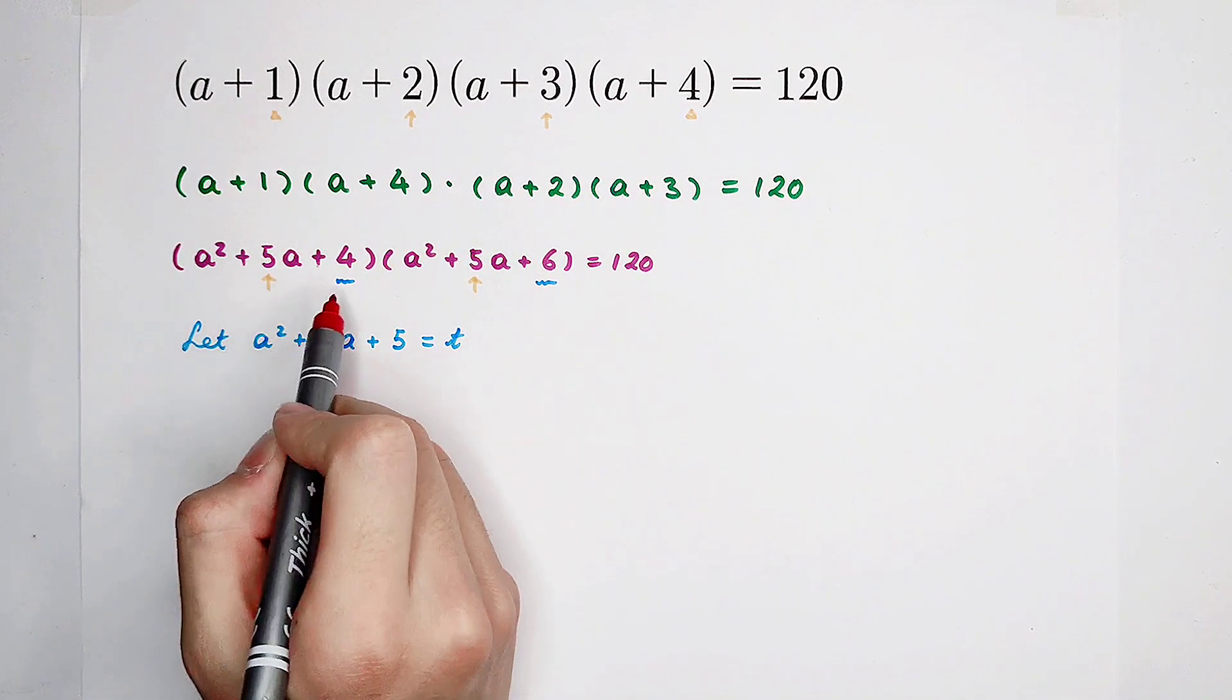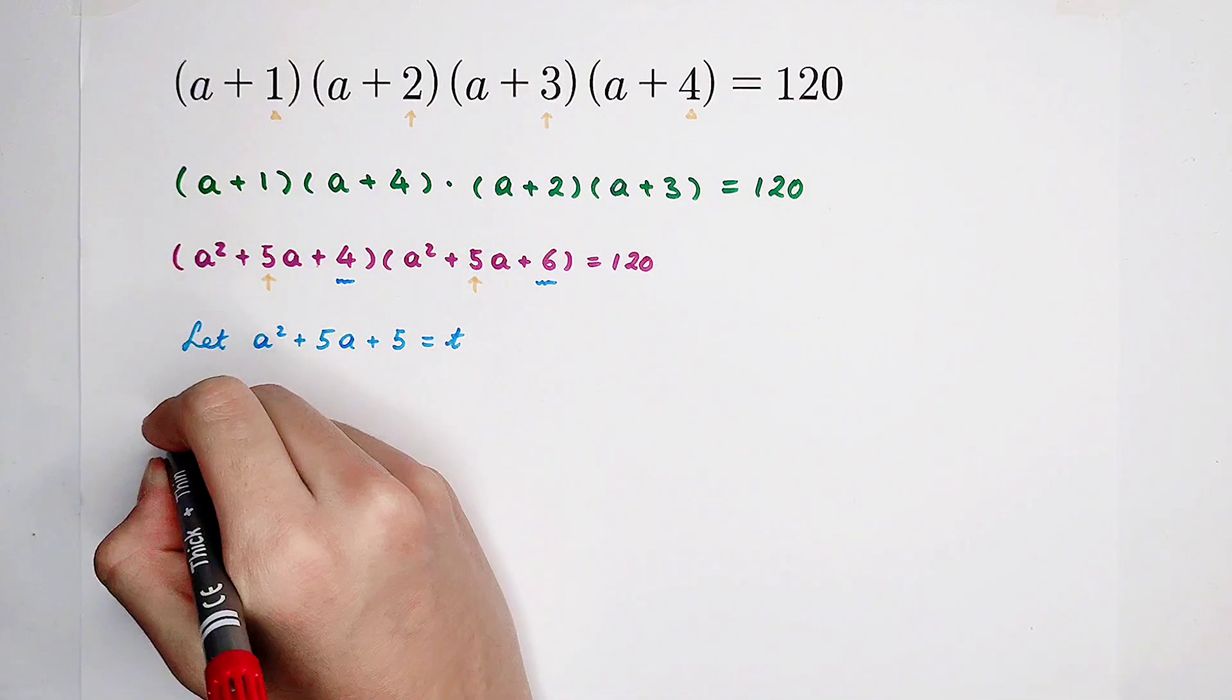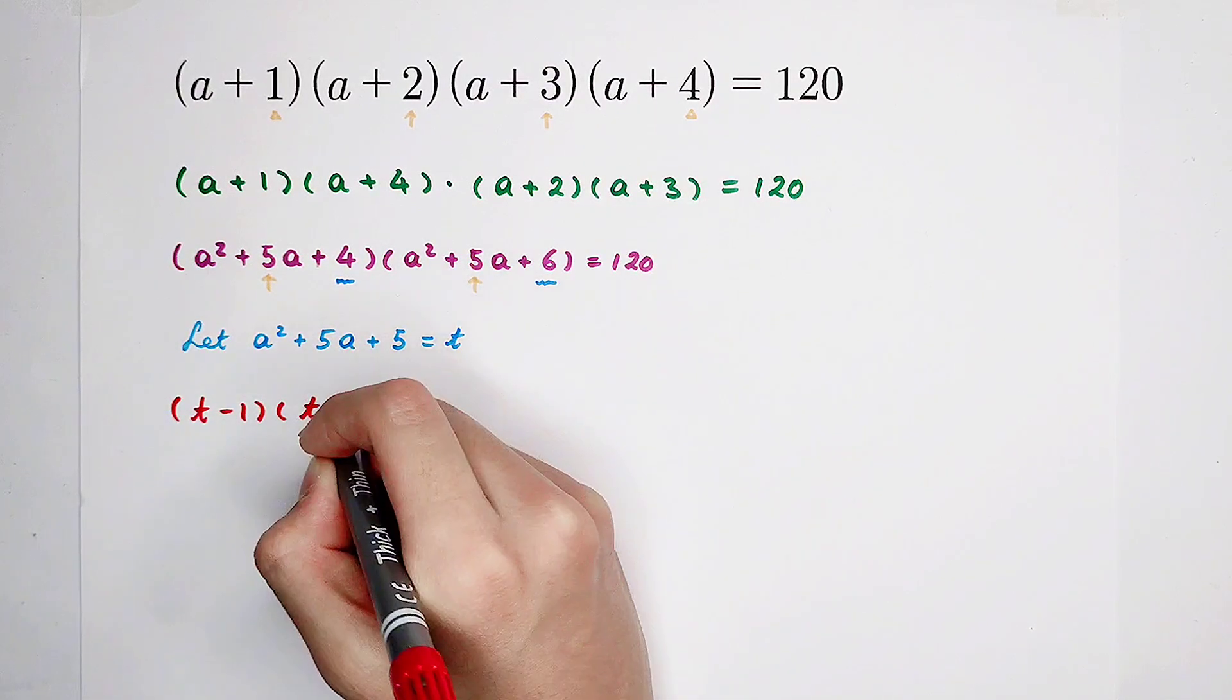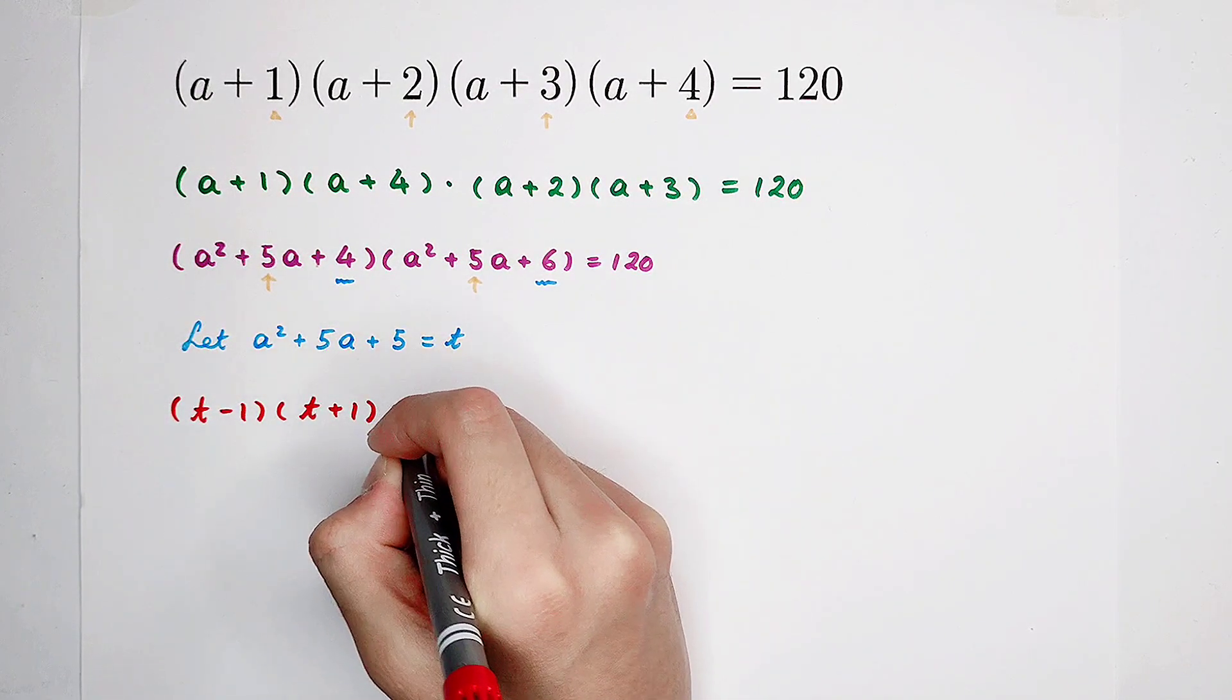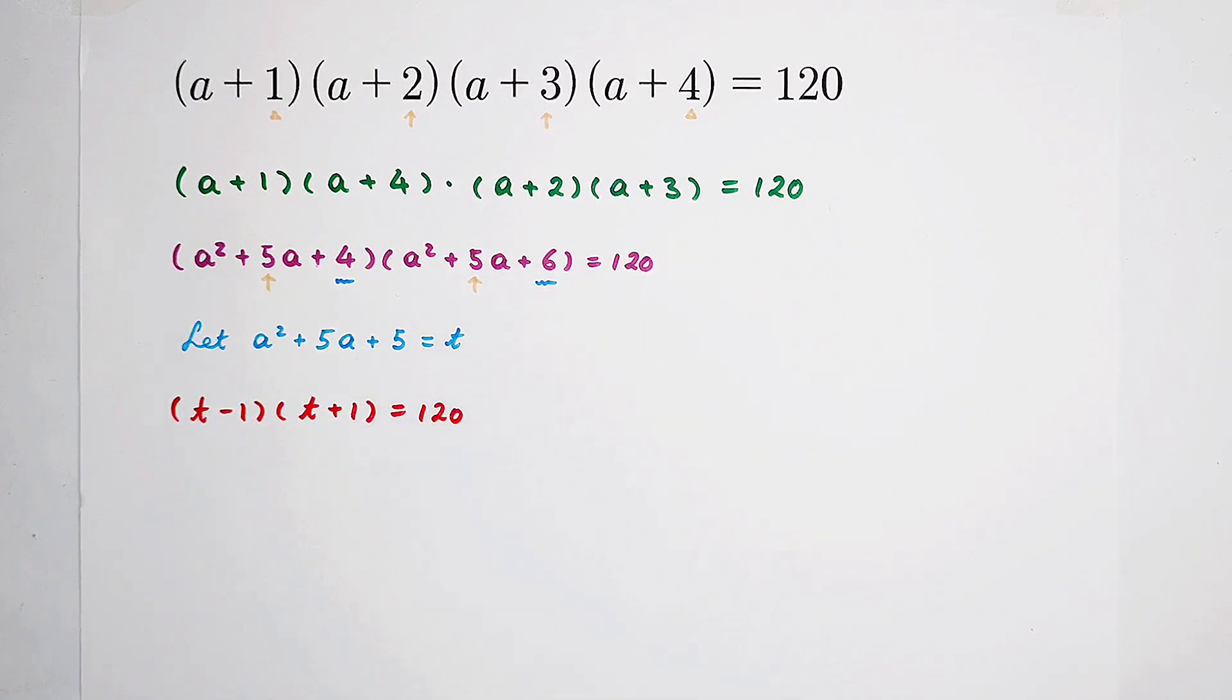a squared plus 5a plus 4 is a squared plus 5a plus 5 then minus 1. It is t minus 1. Here, the same way, it is only t plus 1. Just t minus 1 and t plus 1.